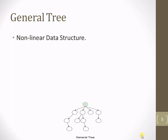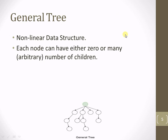The first concept is that a tree is a non-linear data structure — that may be a general tree or a binary tree, but a tree is a non-linear data structure. In a general tree, each node can have either 0 or many number of child nodes; there is no restriction. Minimum 0 and maximum there is no restriction, that is why I have written the arbitrary number of child nodes.